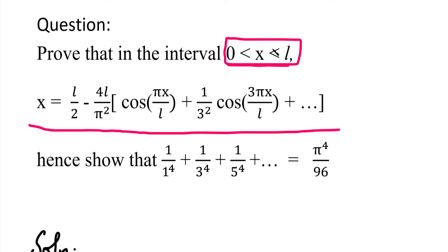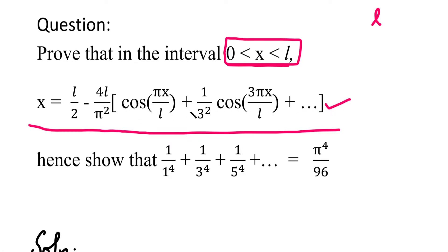Period L means this is a half range series. If you look at the equation to prove, the cosine term is present in the series. So this is a half range cosine series. The function is given separately — usually we find the Fourier sine or cosine series of f(x) equal to some function.